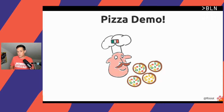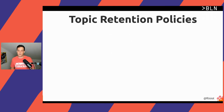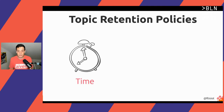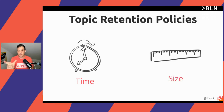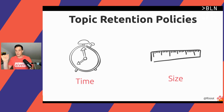For this, we can use topic retention policies. We can tell Kafka to keep events either for a time period — for example, six months, three weeks, two hours — or if we want to control disk usage, we can say: keep the data in Kafka until the specific topic reaches, for example, 10 gigabytes. Then delete the oldest chunk and let it grow again until it reaches 10 gigabytes.